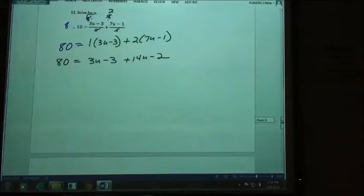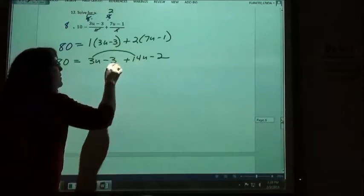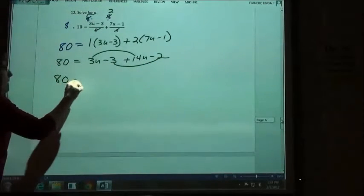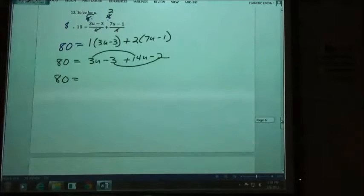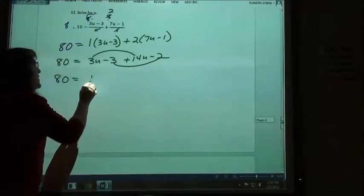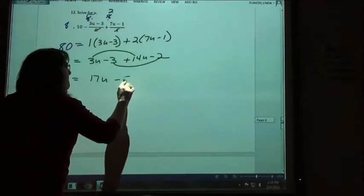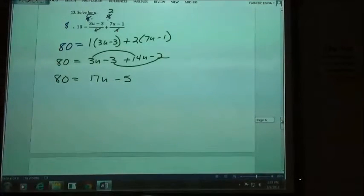So again, on this one, the right side has a whole bunch of terms. I'm going to combine them. I'm not moving them, I'm just going to put them together. So 3u plus 14u would be 17u. Negative 3 minus 2, negative 5.